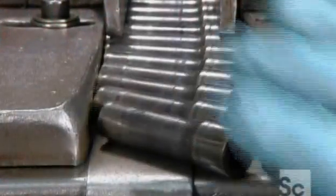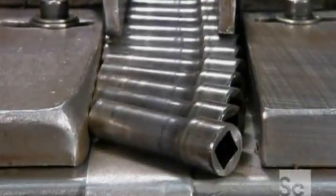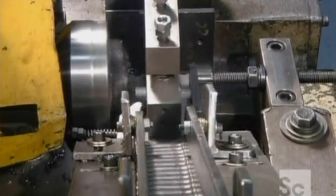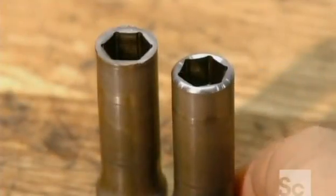A conveyor delivers them to a computerized cutting tool. It removes sharp edges and sculpts a bevel on the socket's inner rim, so it will slide onto bolts more easily. It takes just seconds to improve this socket's profile.